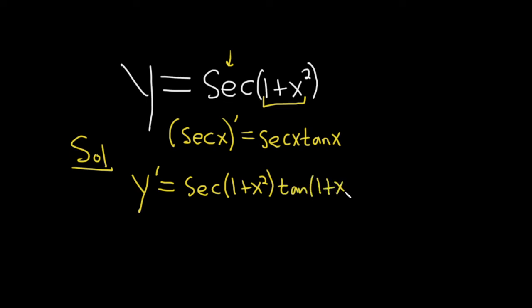And then times the derivative of the inside. So the derivative of 1 is 0, the derivative of x squared—you just bring the 2 down, subtract 1 from the exponent—so you get 2x because it's 2x to the first power.